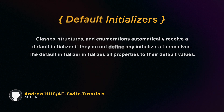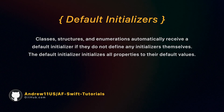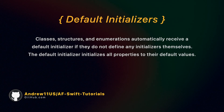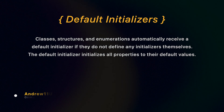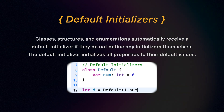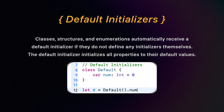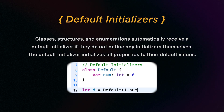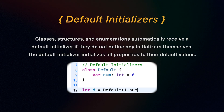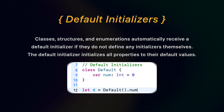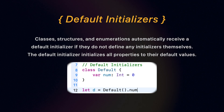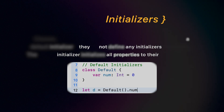Default initializers. Classes, structures, and enumerations automatically receive a default initializer if they do not define an initializer themselves. The default initializer initializes all the properties to their default values.